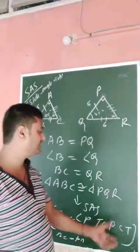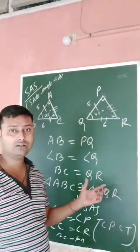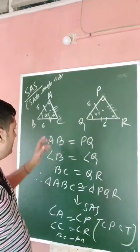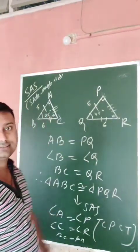This is the first criterion of congruency of two triangles. Clear? Thank you.